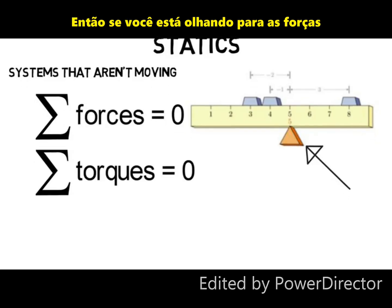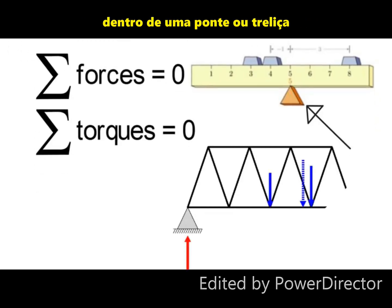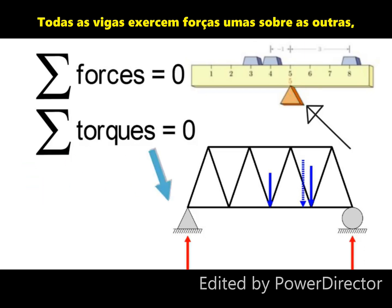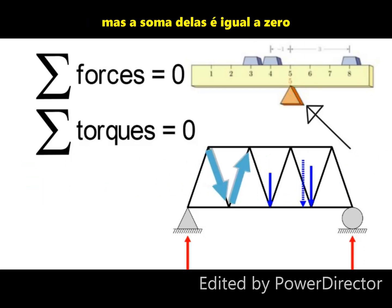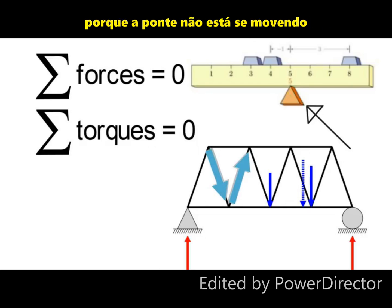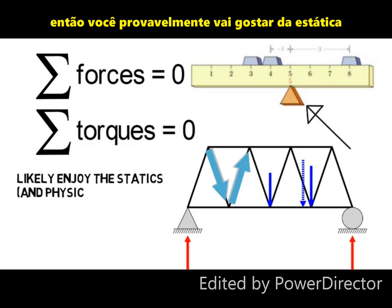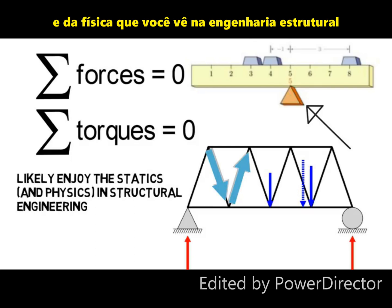So if you're looking at the forces within a bridge or truss, well the same principles apply, but now there's just more to it. The weight is straight down as shown in blue, all the beams exert forces on one another, but the sum of them is equal to zero and the torques sum to zero as well because the bridge is not moving. And it's of course even more complicated than this, but if you enjoy that kind of basic physics, then you'll likely enjoy the statics and physics you see in structural engineering.